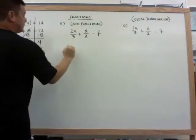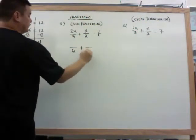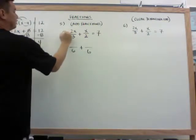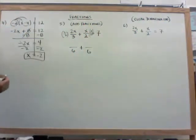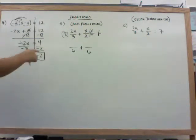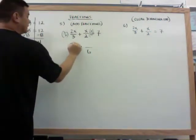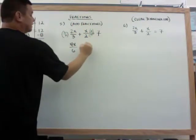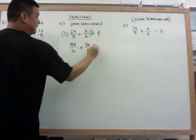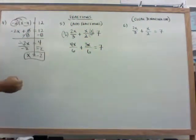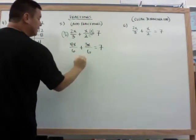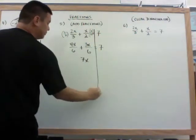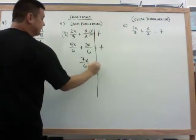So I'm going to multiply this one by 2 over 2. And I'm going to multiply this one by 3 over 3 to get my denominator of 6. When I do this, I get 4x over 6 plus 3 times x is 3x over 6 is equal to 7. Now when I add fractions, I add my numerators and leave the denominator. So I get 7x over 6 is equal to 7.